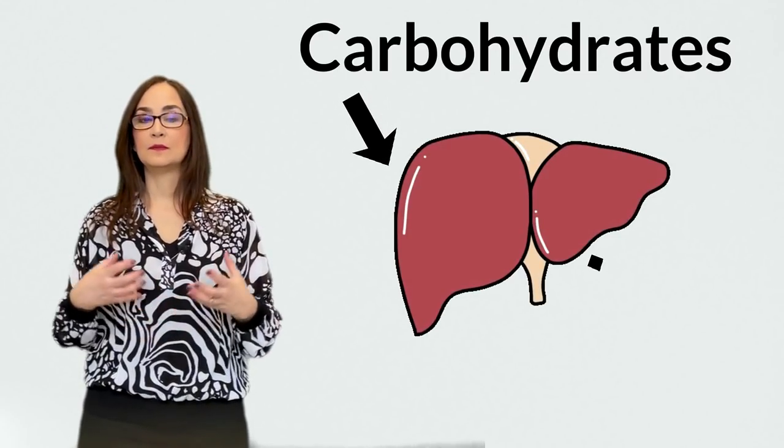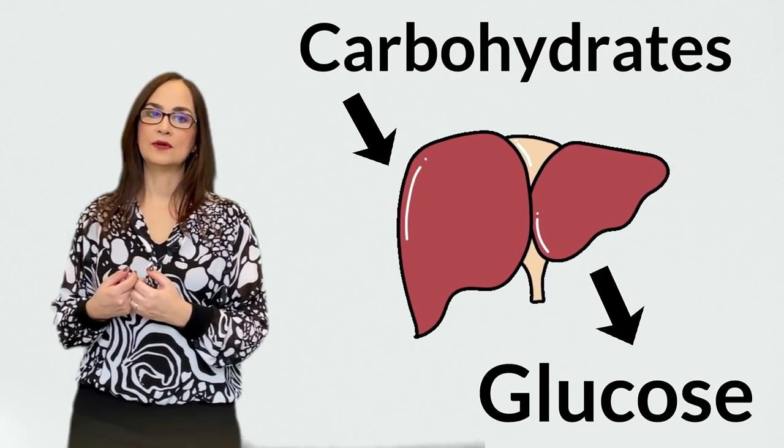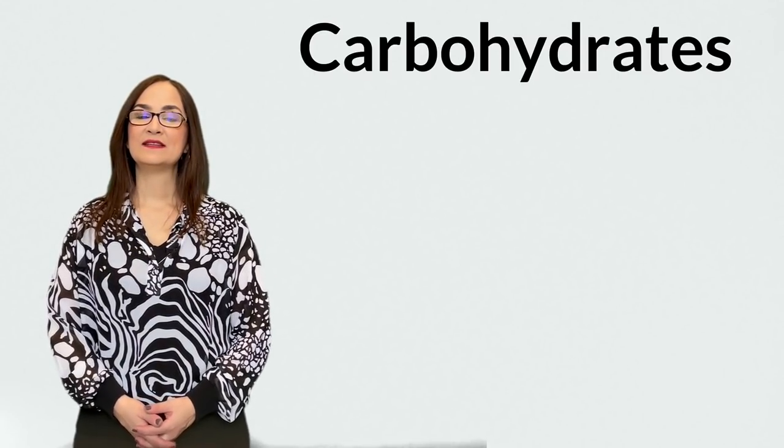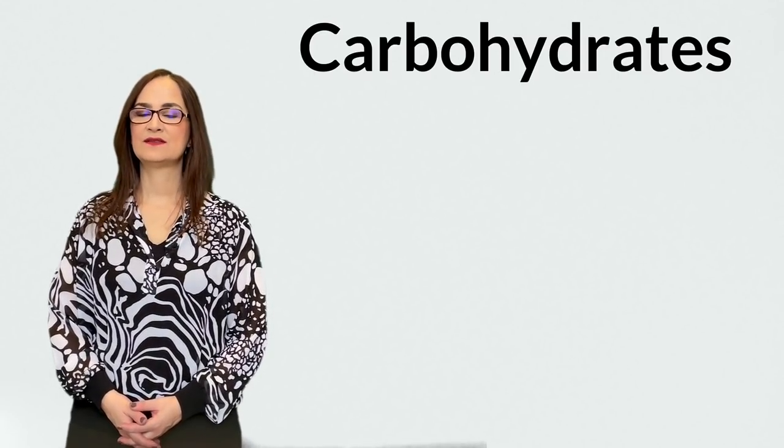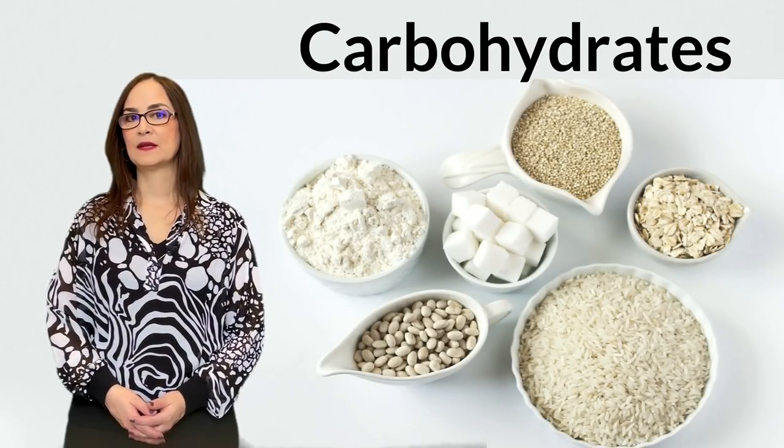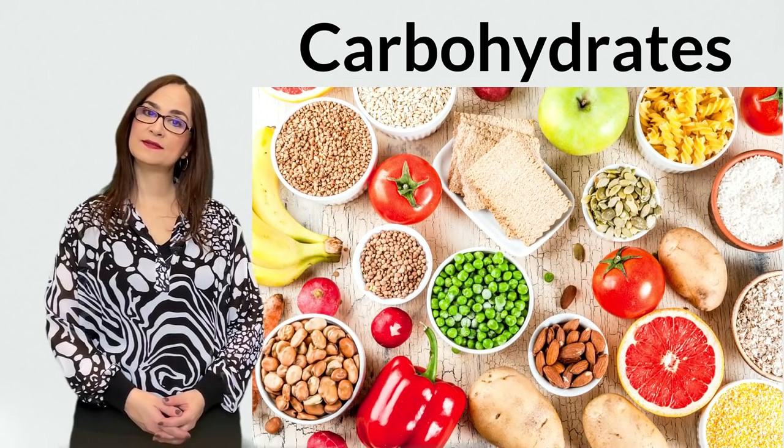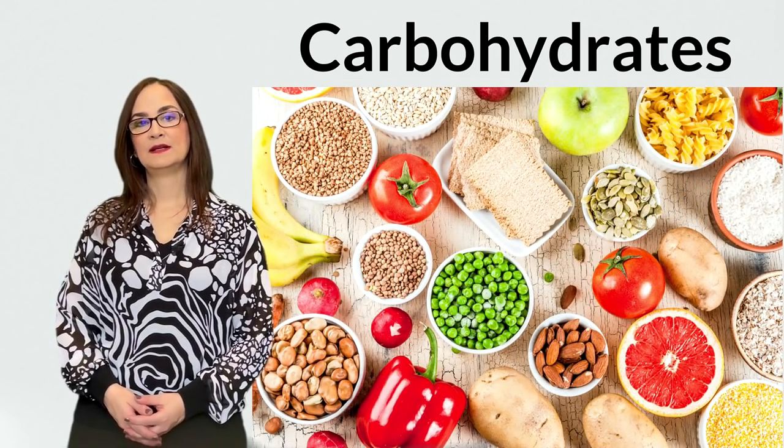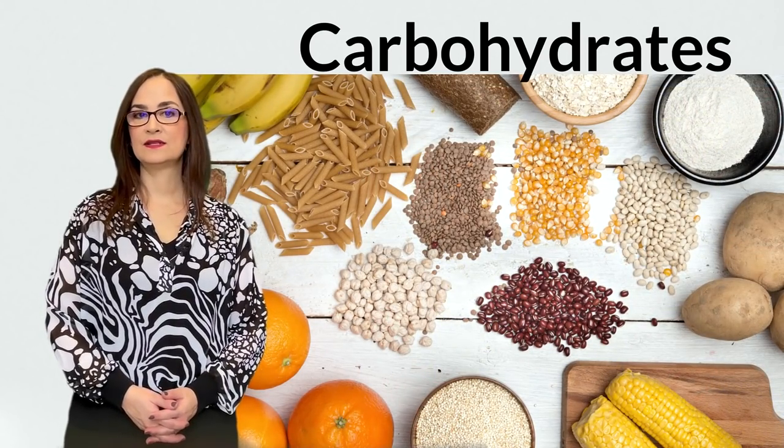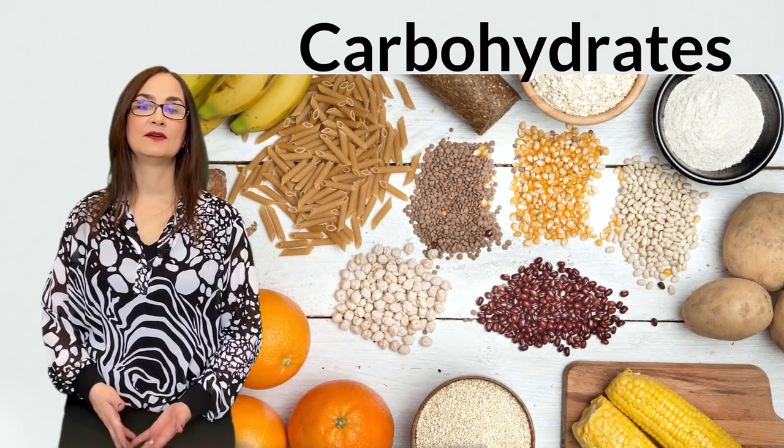When we ingest carbs, they are broken up by our liver into glucose, the main source of energy of our body. So, here are some examples of carbohydrates or carbs: rice, pasta, bread, fruits, milk, and vegetables like potatoes, carrots, beets, and corn.